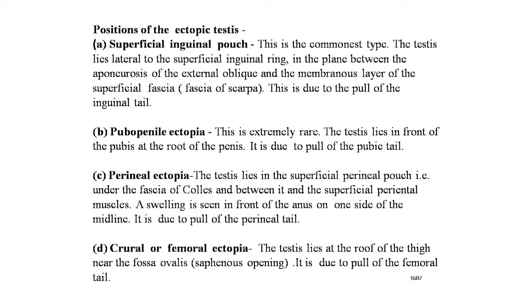The positions of ectopic testes are: superficial inguinal pouch, pubopenanal ectopia, perineal ectopia, and crural or femoral ectopia. The superficial inguinal pouch is the commonest type. The testis lies lateral to the superficial inguinal ring, in the plane between the aponeurosis of the external oblique and the membranous layer of the superficial fascia (Scarpa's fascia). This is due to the pull of the inguinal tail.